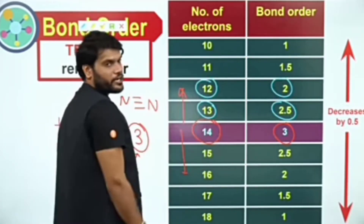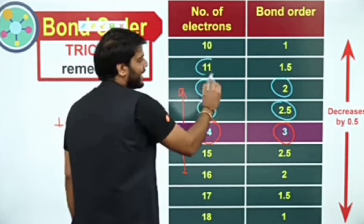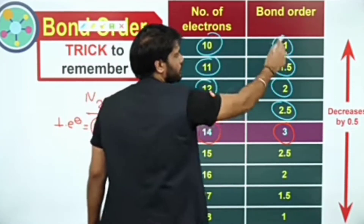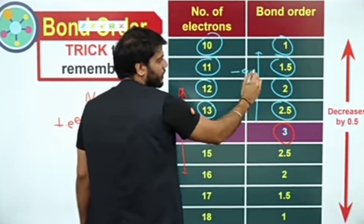So what do I do? I'm going to go up. 11 electrons gives bond order 1.5. 10 electrons gives bond order 1. So from the top, I'm going to minus 0.5 each time.